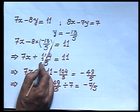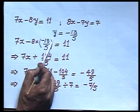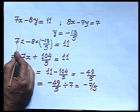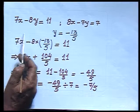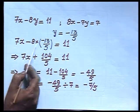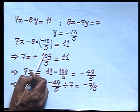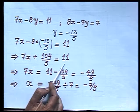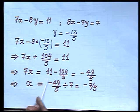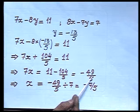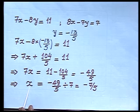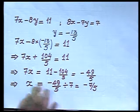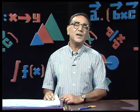This value of y can be substituted either into the first equation or the second equation. Here I have chosen the first equation. So 7x minus 8 times (−13/5) equals 11, which gives 7x plus 104/5 equals 11. From there 7x equals 11 minus 104/5, which gives minus 49/5, and therefore x equals (−49/5) divided by 7, giving minus 7/5.